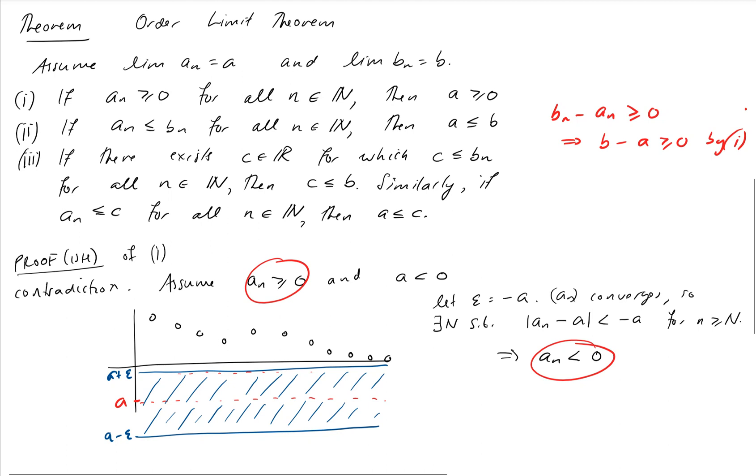And finally, part three. If there's a real number for which C is less than or equal to B_N, or B_N is greater than or equal to C if you like, it's very similar to part one. So the way to go about this one is to create the sequence B_N minus C is greater than or equal to 0 and show that B_N minus C converges to 0. B_N minus C is greater than or equal to 0, which means that B minus C must be greater than or equal to 0. Again, using part one to justify that.